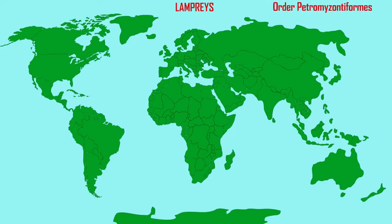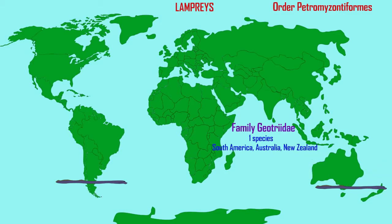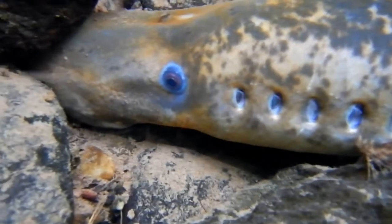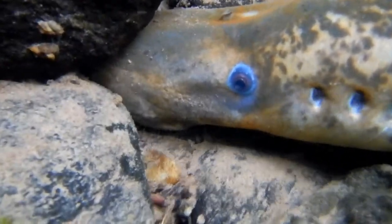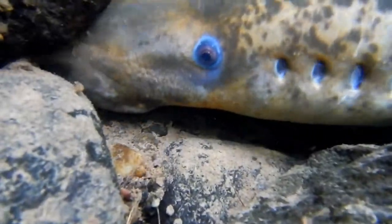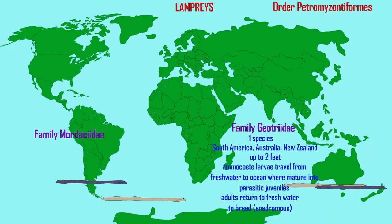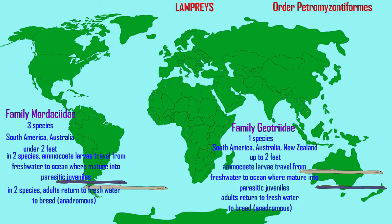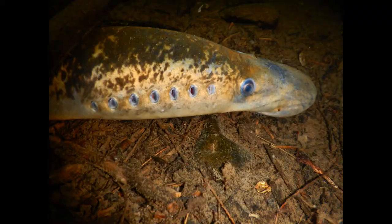There is one species in the family Geotraday. It can reach up to two feet in length and is one of the parasitic lampreys, where parasitic juveniles return to the ocean to prey on fish, and the adults then return to fresh water to breed. The family Mordesidae contains three species, two of which are parasitic and one of which is non-parasitic, spending its entire life in fresh water.